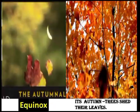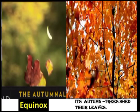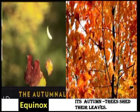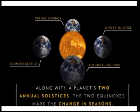Now let us see the second equinox — the autumnal equinox. In this equinox, the trees shed their leaves, meaning there is autumn. The autumnal equinox is also called the fall equinox. Equinoxes are opposite on either side of the equator, so the autumnal or fall equinox in the northern hemisphere is the spring or vernal equinox in the southern hemisphere, and vice versa. Along with a planet's two annual solstices, the two equinoxes mark the change in seasons — both solstices and equinoxes are responsible for the formation of seasons.